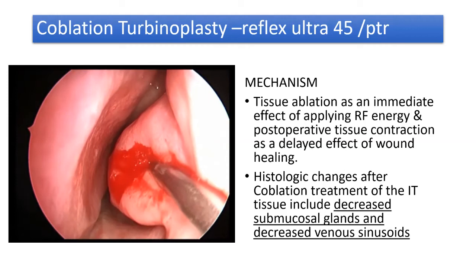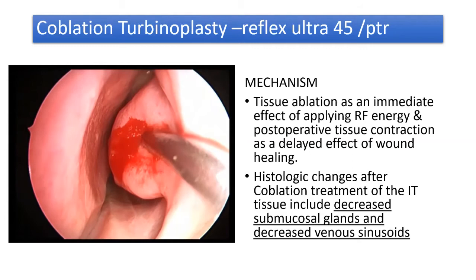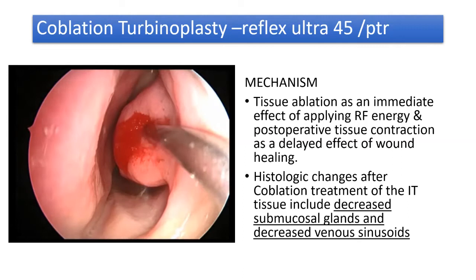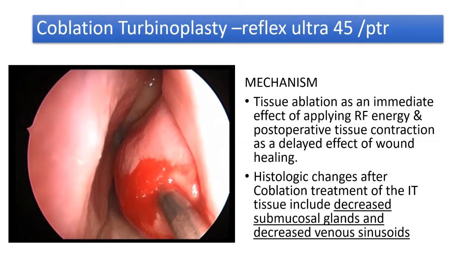Histologically, this technology reduces the submucosal glands and venous sinusoids which form the basis for increased inferior turbinate size. Adding a turbinoplasty — a very minimally invasive one — to your adenoidectomies improves quality of life post-procedure. There is a lot of literature supporting that adding inferior turbinoplasty increases subjective satisfaction rates.